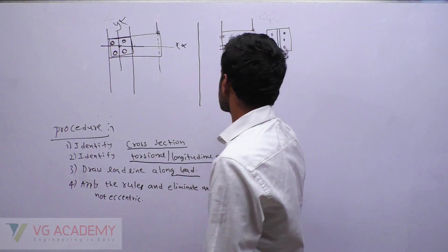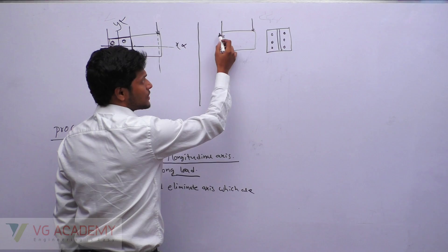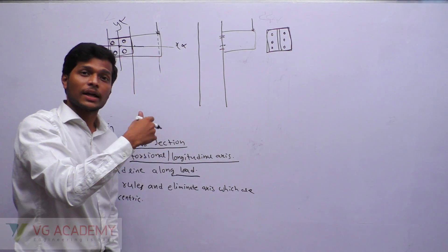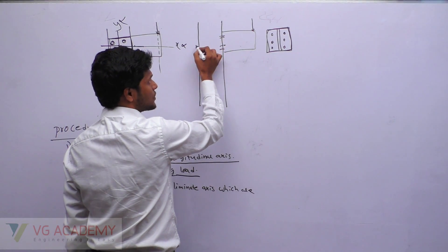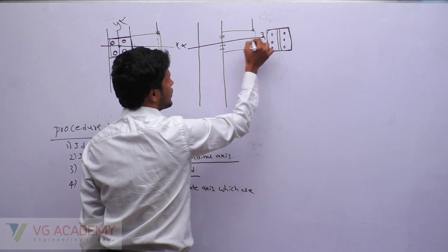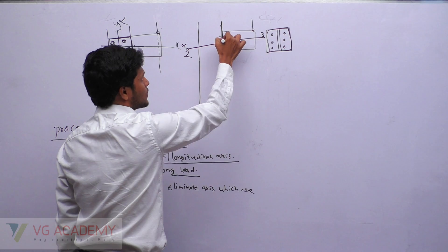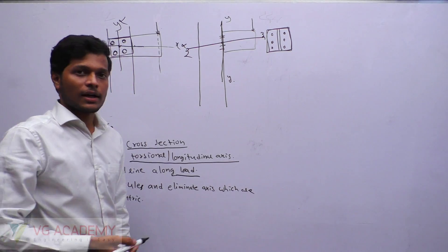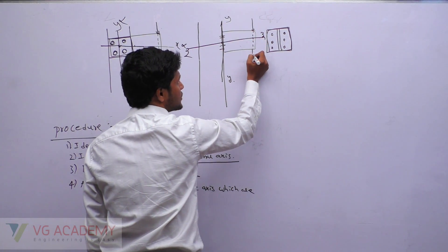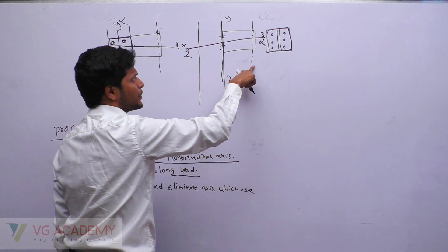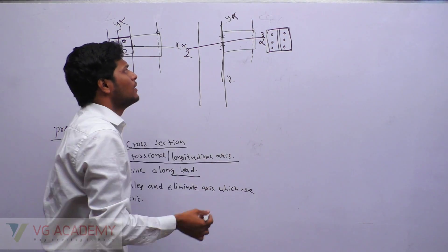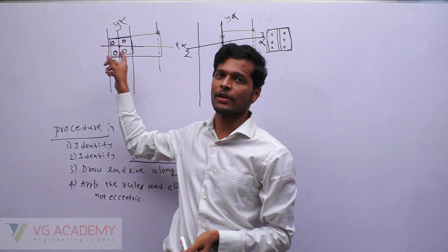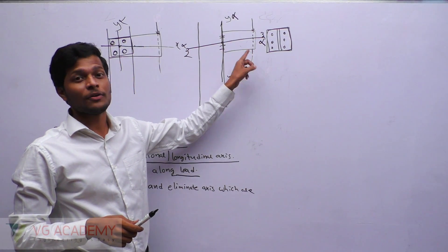Now for the load lying out of the plane case: here is the side view showing the cross section. The longitudinal axis cuts the cross section at a single point. Call the remaining axes X and Y. Extend the load line and apply the rules: eliminate because it is meeting, and eliminate because it is parallel. The remaining axis is X axis, so it is bending about the X axis. Load lying within the plane gives torsion; load lying out of the plane gives bending.